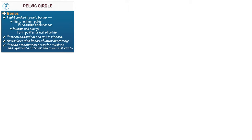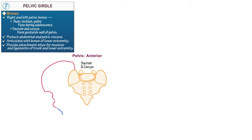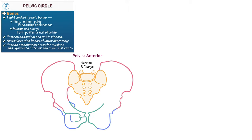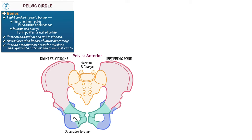Now let's show the pelvic girdle in articulation in anterior view. Begin with the fused sacrum and coccyx, then outline the right and left pelvic bones. Label the obturator foramen, which is the space enclosed by circles of bone. Indicate the acetabulum, which is where the lower extremity articulates with the pelvis. Where the pelvic bones meet anteriorly, show the pubic symphysis, which is a cartilaginous pad connected to the bones via ligaments.